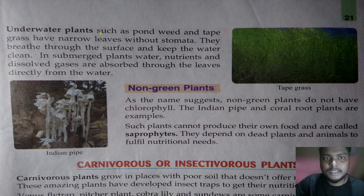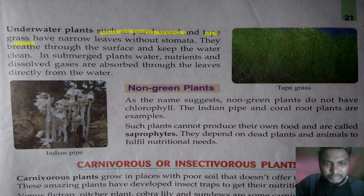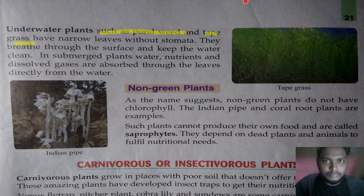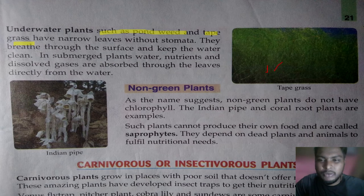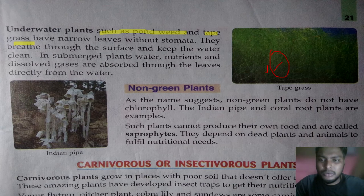Underwater plants such as pondweed and tape grass have narrow leaves without stomata. They breathe through their surface and help keep the water clean. In submerged plants, water, nutrients, and dissolved gases such as oxygen and carbon dioxide are absorbed directly from the water through the leaf surface. Carbon dioxide is also expelled through diffusion, and these plants help keep the water body clean.